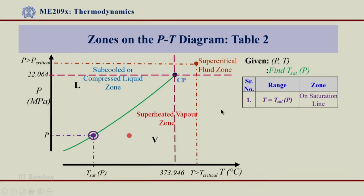The second case now, I am comparing temperature here and if this temperature happens to be more than the T_sat(P) value over here, so in case my T is more than T_sat(P), the state lies in superheated vapor zone as shown over here.